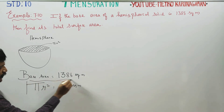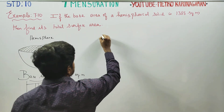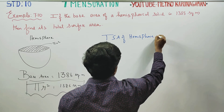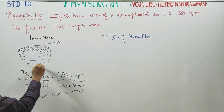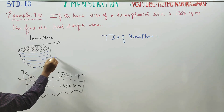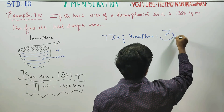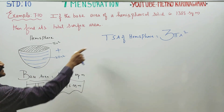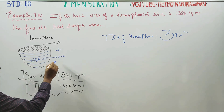Now we find the total surface area (TSA) of the hemisphere. The TSA of a hemisphere formula combines the curved surface area (CSA) and the base circle. The CSA of a hemisphere is 2 pi r square, plus the base circle area which is pi r square.